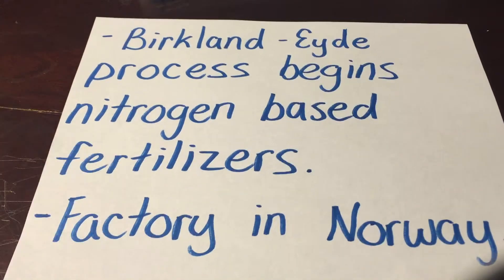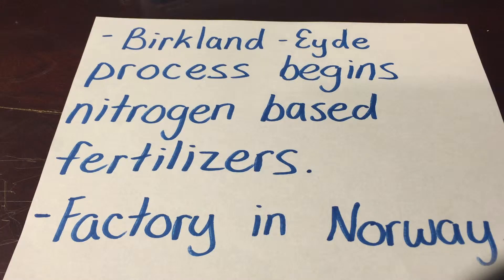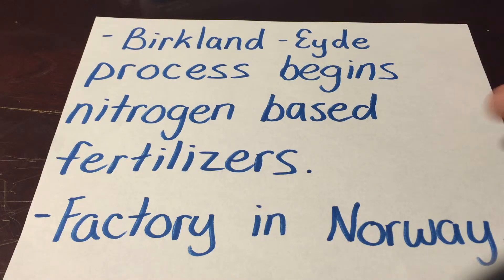Then came the Birkeland-Eyde process, which began using nitrogen-based fertilizers. It was developed by Norwegian scientist Christian Birkeland and his partner Eyde. The process fixed atmospheric nitrogen into nitric acid — which is nitrogen fixation — and that nitric acid could then be used to produce synthetic fertilizer. They built a factory in Norway processing nitrogen.